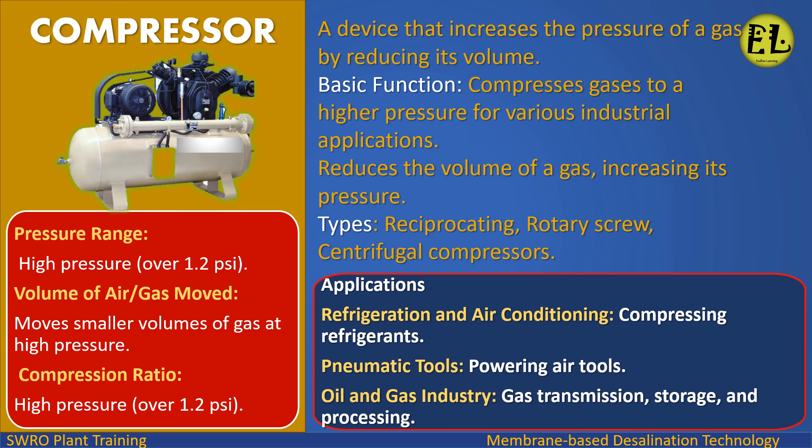Compressor: a device that increases the pressure of a gas by reducing its volume. Basic function: compresses gases to a higher pressure for various industrial applications by reducing the volume of a gas and increasing its pressure. Types: reciprocating, rotary screw, centrifugal compressors. Applications: refrigeration and air conditioning, compressing refrigerants, pneumatic tools, powering air tools. Pressure range: high pressure, over 1.2 PSI. Compression ratio: high pressure, over 1.2 PSI.